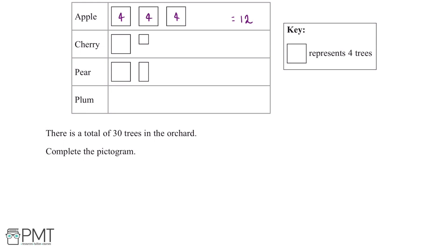There is one large square in the cherry tree row which represents four, and there is also a smaller square. This smaller square is a quarter of the size of one of the larger squares. And because one of the larger squares represents four trees, a square which is a quarter of the size will represent one tree. Adding these together tells us that there are five cherry trees.